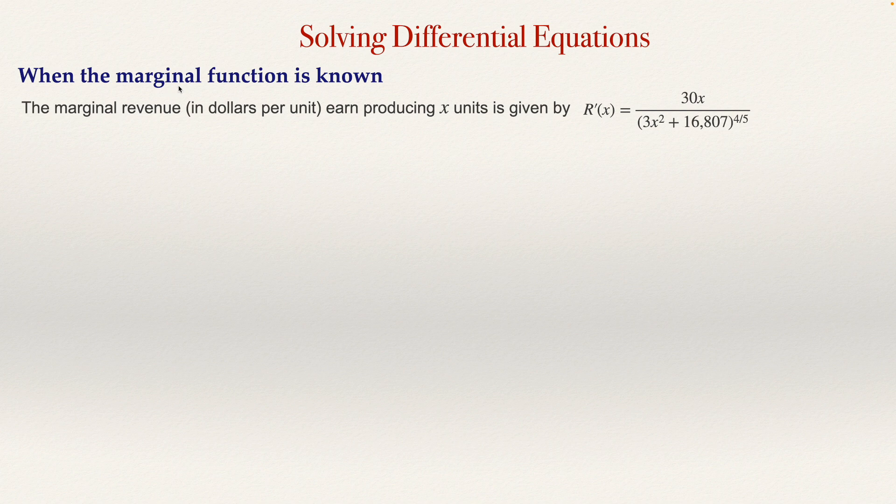We can compute the function, so we can get an expression for the revenue, an expression for the cost, etc., depending on what we have. In this case we know the marginal revenue, so the marginal revenue in dollars per unit is given by this expression: the marginal revenue equals 30x divided by (3x² + 16,807) to the power 4/5, and we need to find the revenue function.